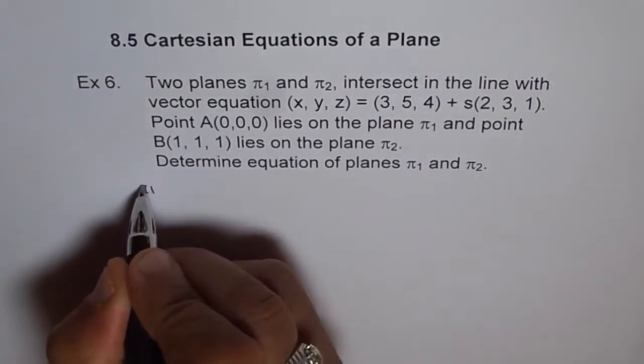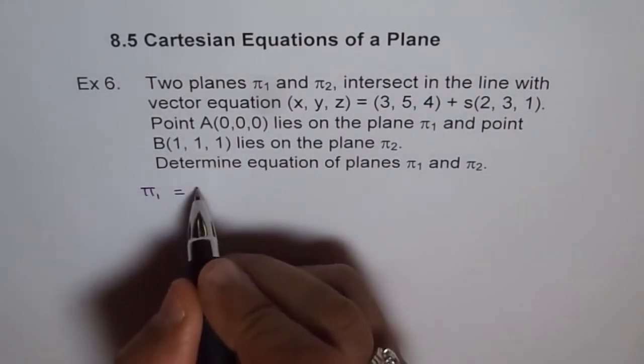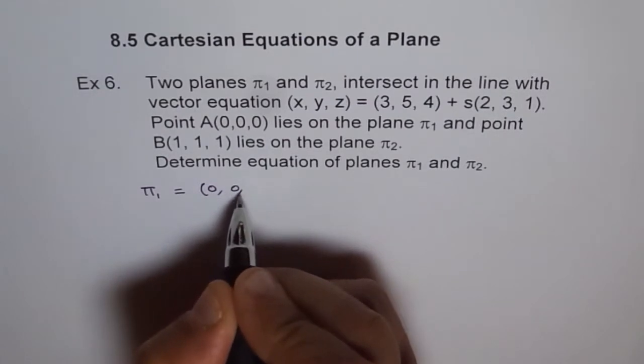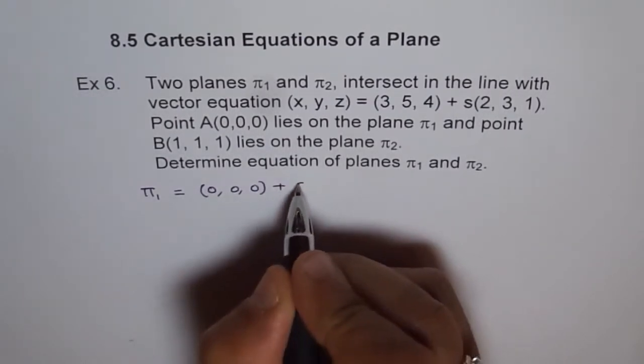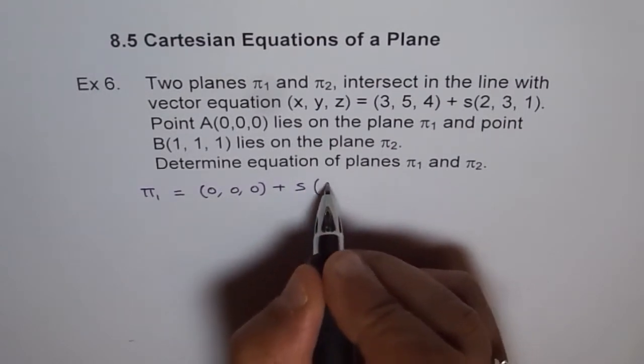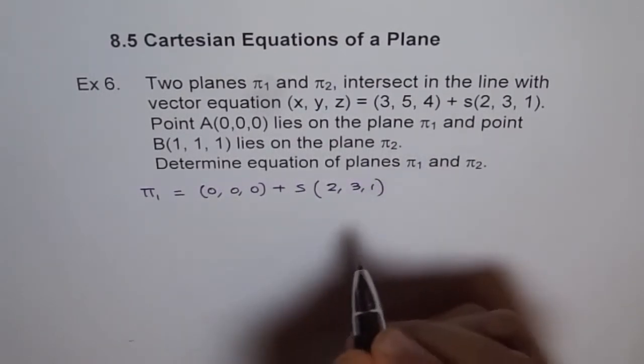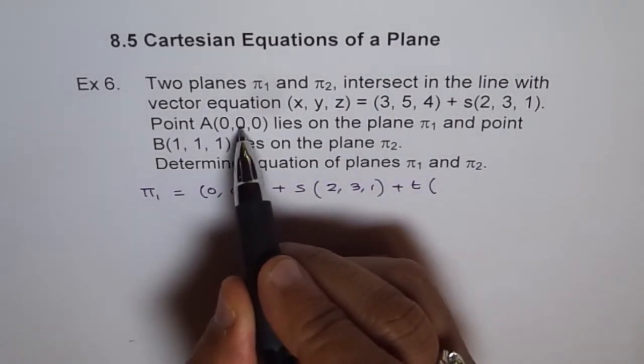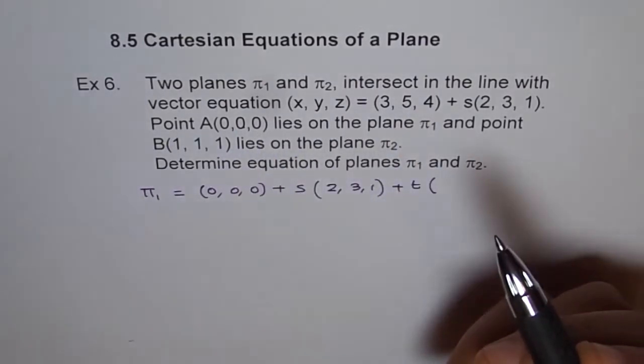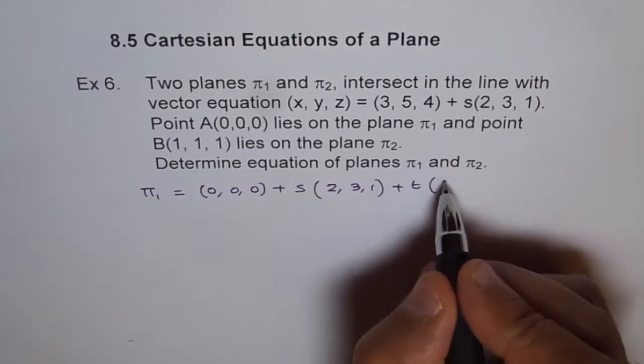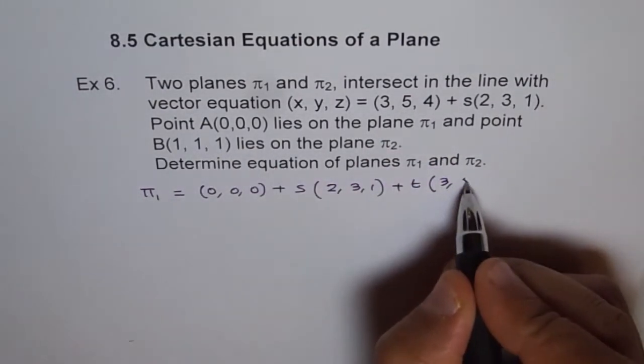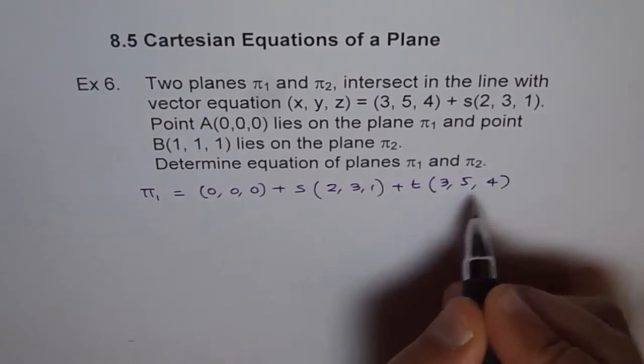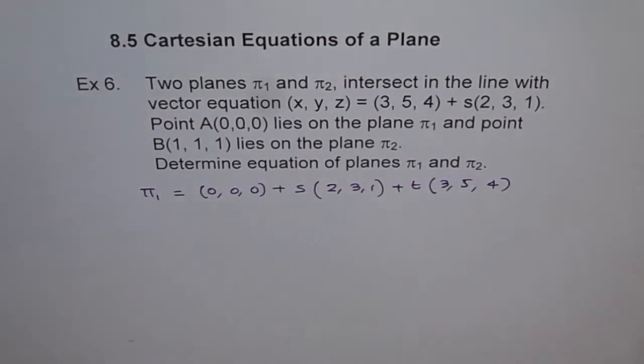We can assume this lies on plane π₁. So π₁ is actually equal to the point on the plane, which is (0,0,0), plus s times this vector (2,3,1) on the line, plus t times the vector between these two points. So we can say (3-0, 5-0, 4-0) equals (3,5,4). That is our vector equation of plane π₁.